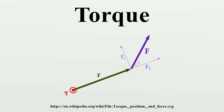A force applied at a right angle to a lever multiplied by its distance from the lever's fulcrum is its torque. A force of 3 newtons applied 2 meters from the fulcrum, for example, exerts the same torque as a force of 1 newton applied 6 meters from the fulcrum. The direction of the torque can be determined by using the right-hand grip rule. If the fingers of the right hand are curled from the direction of the lever arm to the direction of the force, then the thumb points in the direction of the torque.